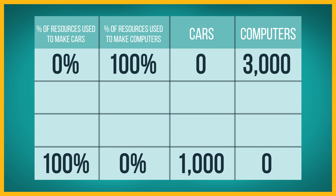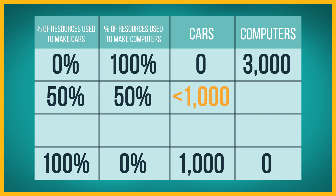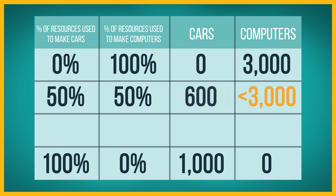Now, what would happen when the economy uses one half of its resources to make computers and one half to make cars? The economy would produce less than 1,000 cars and less than 3,000 computers. Let's suppose that the numbers are 600 cars and 2,000 computers.